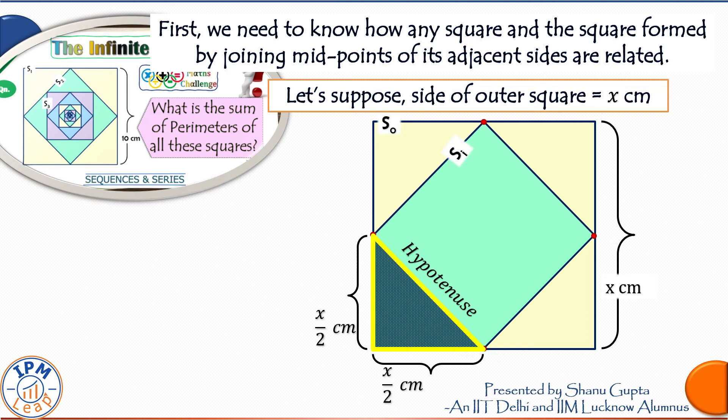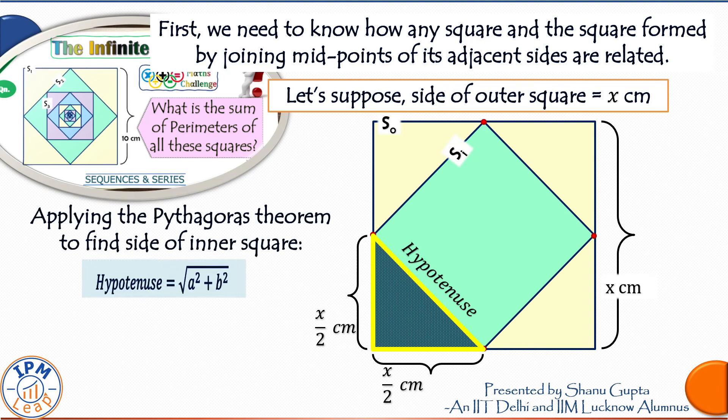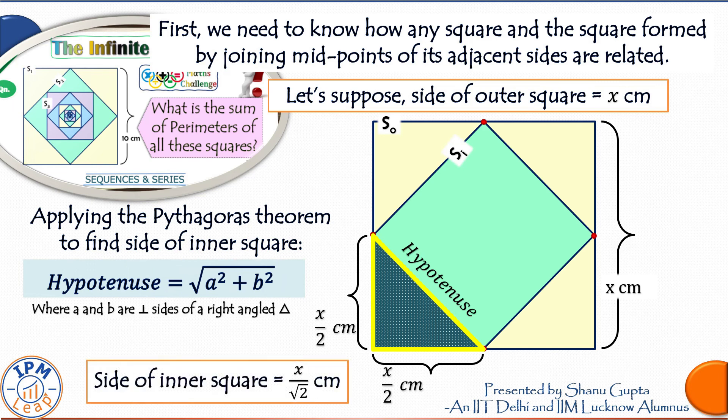Now in any right angle triangle, we know that the Pythagoras theorem applies to the three sides. So hypotenuse will be equal to under root of a squared plus b squared, where a and b are the lengths of perpendicular sides of the right angle triangle. Doing the calculations, we get the side of our inner square as x upon root 2 centimeter.